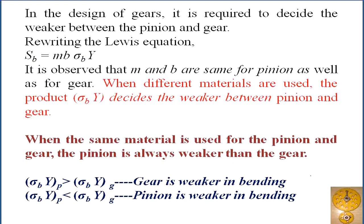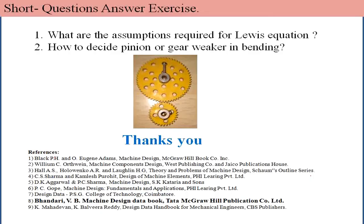The weakest part should be designed first and its dimensions carried forward. The product σb × Y for pinion less than gear means pinion is weaker in bending; σb × Y for gear less than pinion means the gear is weaker in bending. This is how beam strength equations are used to decide the weaker component.